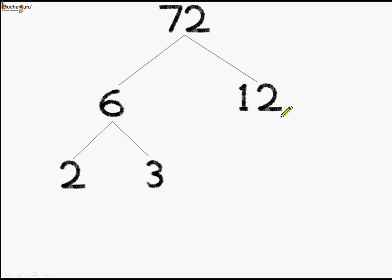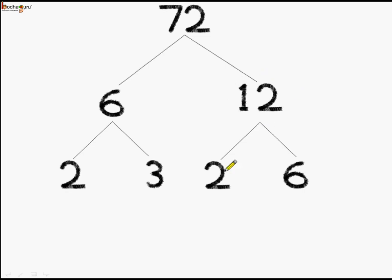Now, coming to the other branch of 72 which is 12. 12 again is not a prime number, so we can factorize it. We can say 2 sixes are 12, and we got 2 branches of 12. Let us come down one level. 2 is a prime number. 3 is a prime number. 2 is again a prime number. What about 6? No, it is not a prime number. So, we will branch out again — we know 2 threes are 6. So, 2 and 3.